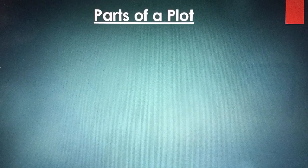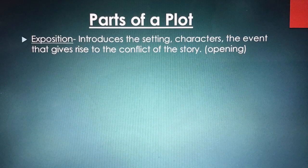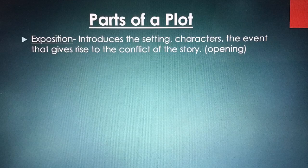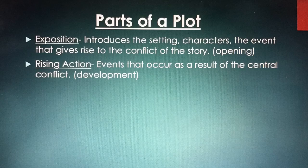There are many parts of the plot. First, we have the exposition. This introduces the setting, characters, and the event that gives rise to the conflict of the story — so it leads to where the conflict might be. Rising action is the next part of the plot. These are the events that occur as a result of the central conflict. Conflict is a problem, so the main character is usually trying to achieve something, and the rising action is where all the events happen as a result of that conflict.